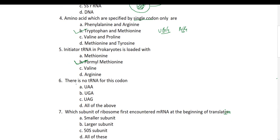Sixth question: there is no tRNA for which codon — UAA, UGA, or UAG? Quite clearly, all of these are stop codons. Stop codons do not get recognized by tRNA; there is no tRNA for stop codons. Instead, they are recognized by release factors, which help in termination of the polypeptide. So all of the above are stop codons and there is no tRNA for them.